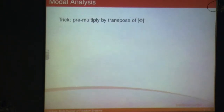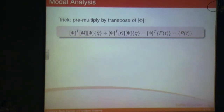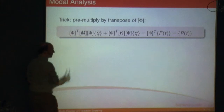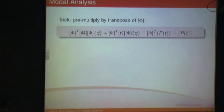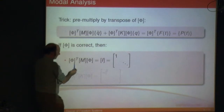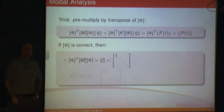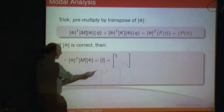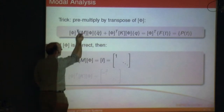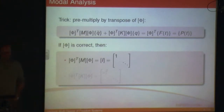If we apply a trick — premultiplying by the transpose of φ — something interesting happens. If you've determined the terms in φ correctly, then that first term, φ-transpose times M times φ, will give you the identity matrix. It's a diagonal matrix and the only things in the diagonal are 1 — so you've got 1, 1, 1, 1 down the middle; all the other terms are 0. That term essentially becomes 1, so you end up with just q̈.